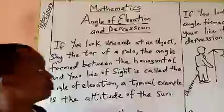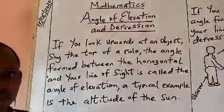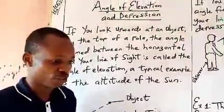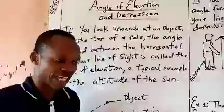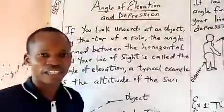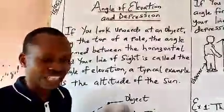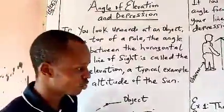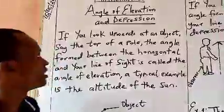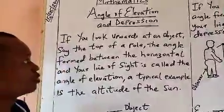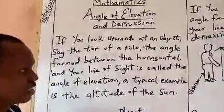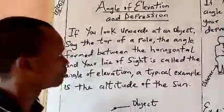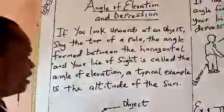Now when we are talking about depression, it is directly opposite to elevation. It is something that is below an observer in such a way that you have to view downwards to that object. So we want to look at the differences between angle of elevation and depression and work through some practical examples based on that.